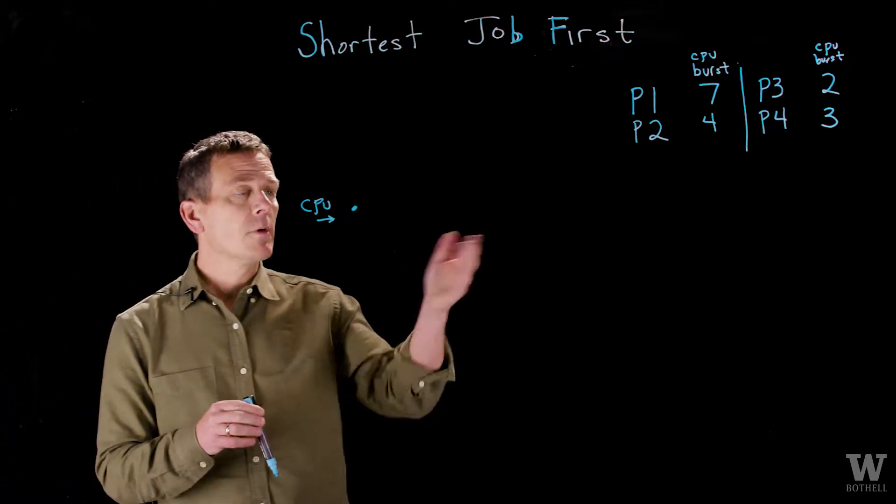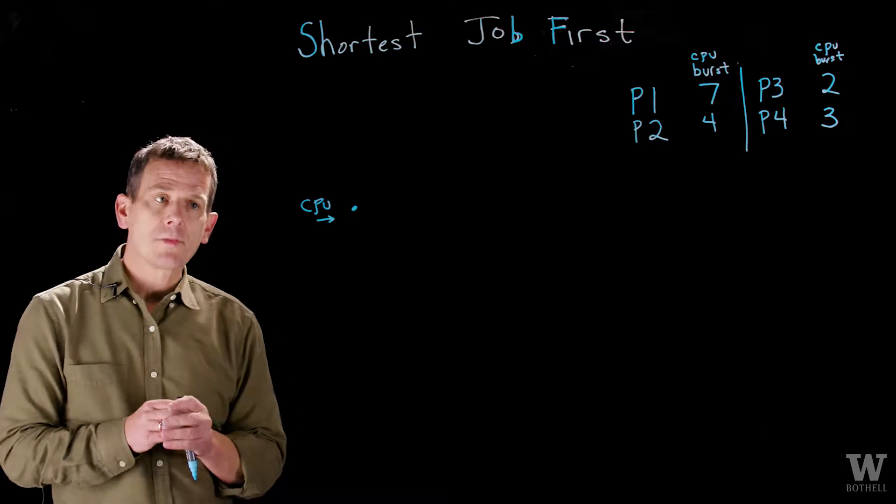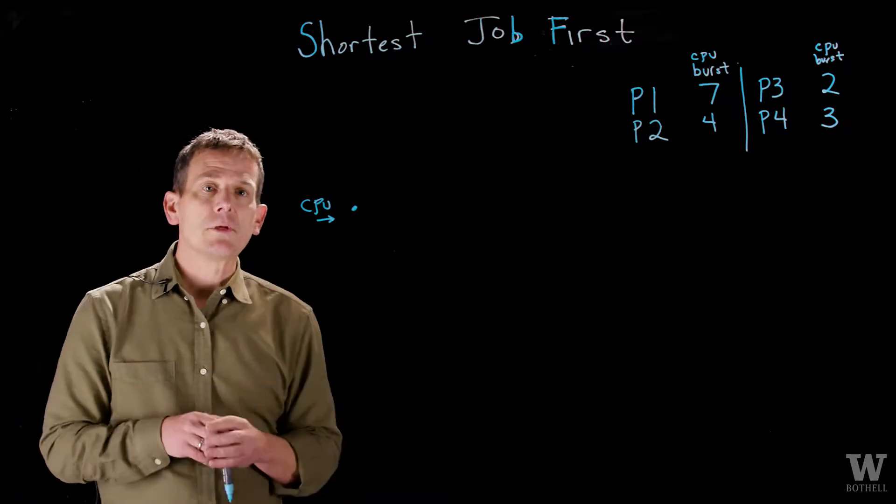So here's an example. I have four processes. Let's assume each of these have one thread, and I have one CPU that I need to schedule.